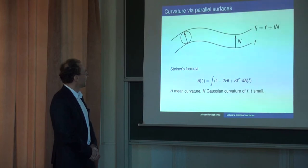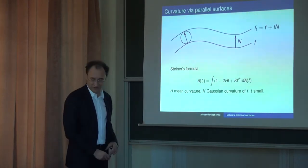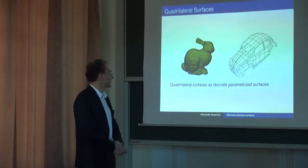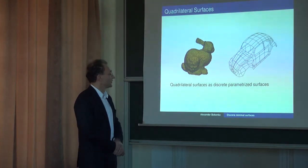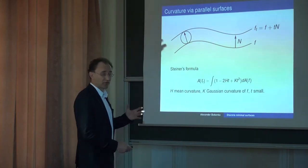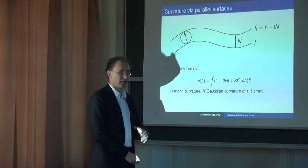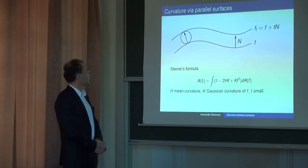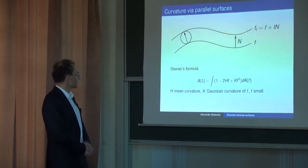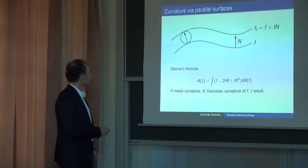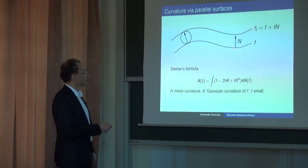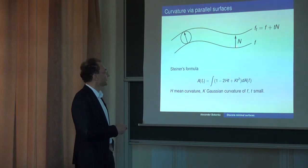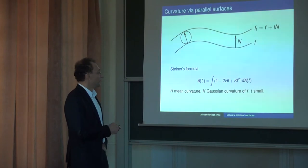I'm going to present some discrete curvature theory. We will consider only quadrilateral surfaces, which can be seen as parameterized discrete surfaces. We will start with the following fact from smooth theory: the so-called Steiner formula. What you see here is a surface, and this is the normal shift of your surface — you shift every point on the surface in the normal direction by the same distance and get a parallel surface.